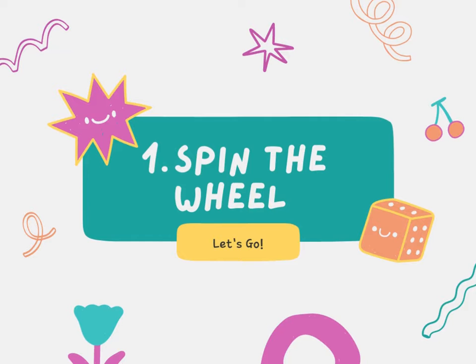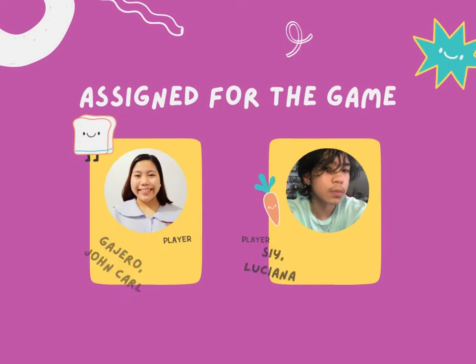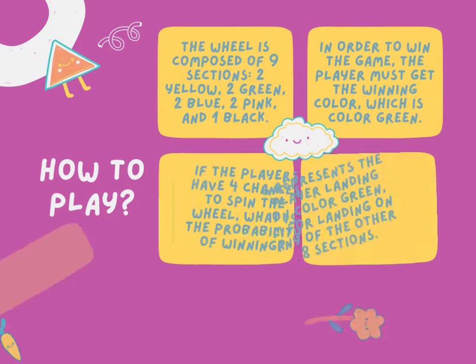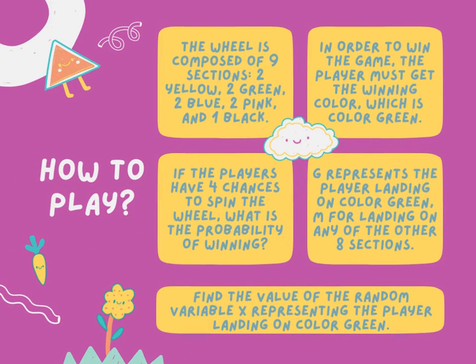Our first game is called Spin the Wheel. Here is how we can play it. The wheel is composed of nine sections: two yellow, two green, two blue, two pink, and one black.